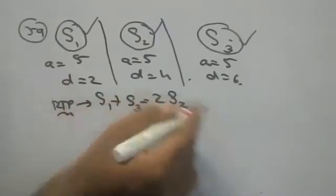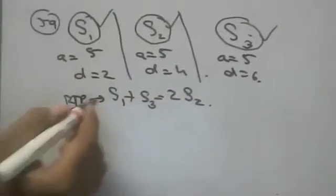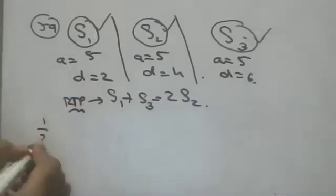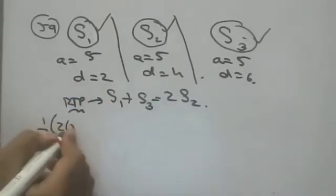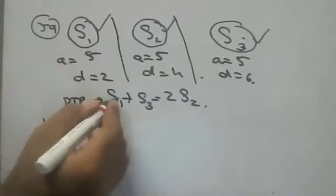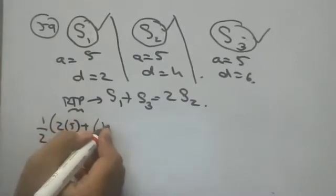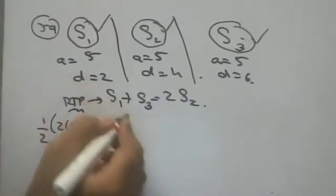We have to prove S1 plus S3 is equal to 2*S2. S1 means what? S1 means sum of one term: 1/2 into 2A, 2A plus 1, n minus 1, 1 minus 1. Common difference is how much?